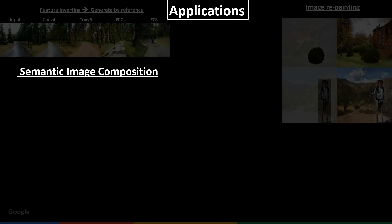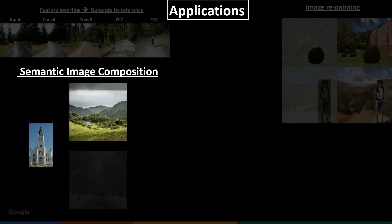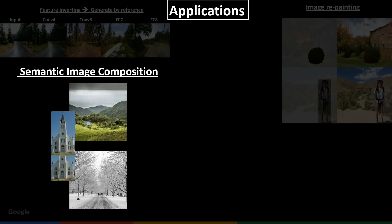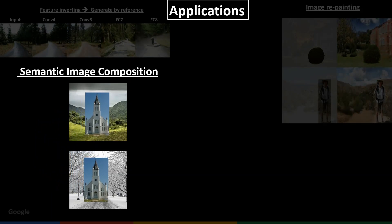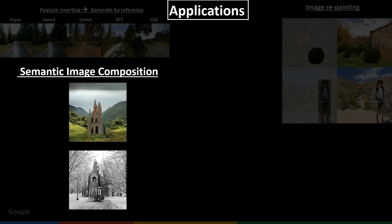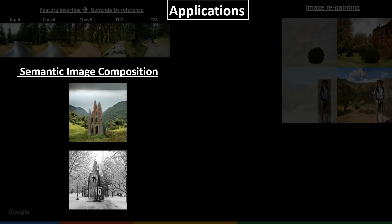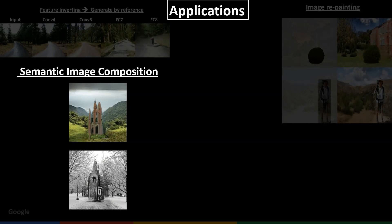In semantic composition, given a patch and a scene image, the goal is to harmonize the object into the scene realistically. Note how differently from similar works, the object drastically changes to match the environment, but keeps its semantic meaning.